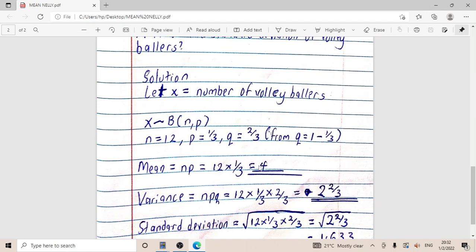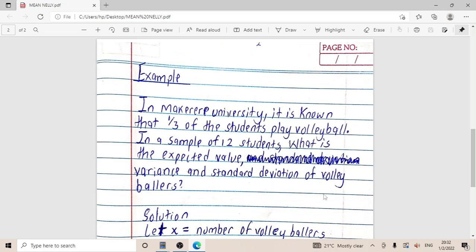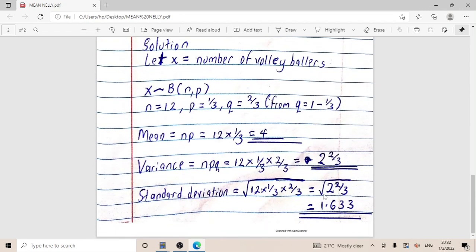Variance, which is npq, equals 12 times one out of three times two out of three, giving me this answer here.